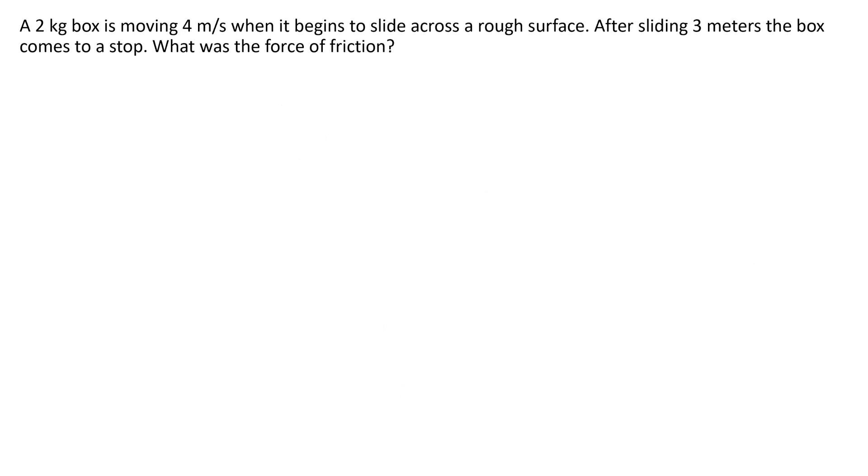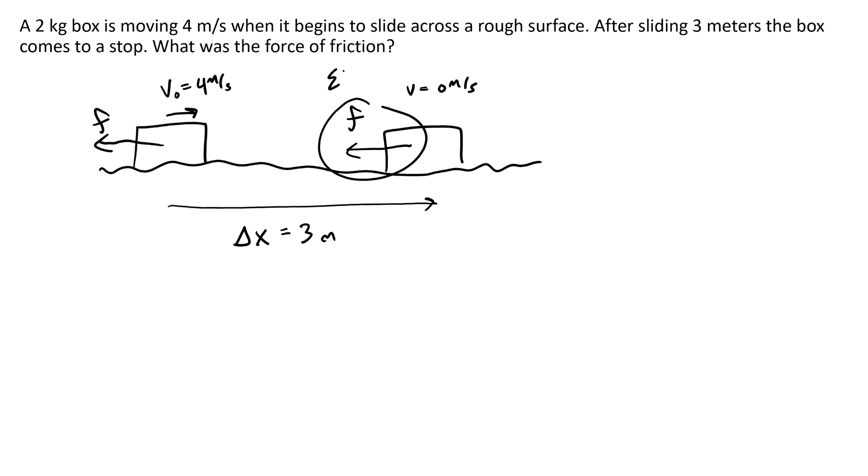In this problem, the 2 kilogram box is moving 4 meters a second when it begins to slide across a rough surface. After sliding 3 meters, the box comes to a stop. What is the force of friction? So similarly here, you have a box moving across a rough surface. As it moves to the right, a distance of 3 meters. Sorry, we're calling a delta X for now. You can say D. It's fine. It doesn't matter. It initially has a velocity of 4 meters per second. But at the end, it will come to a rest, so the velocity is zero. And I know that while it is moving, the only force acting on it is a force of friction backwards. Nothing is pushing it forward as it moves forward. Friction is slowing it down. So that means that the force of friction is the net force. There's nothing to act against it. It's the only thing that's slowing the box down.